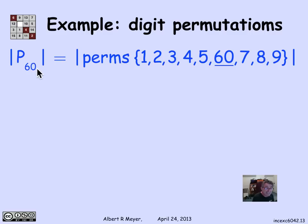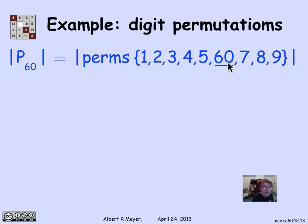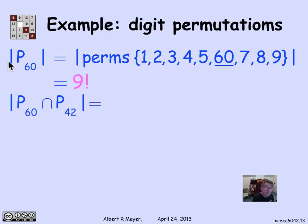Let's count P60: permutations containing the pattern 6,0. Think of it as permuting nine items — the digits 1–5 and 7–9, plus the object '6,0' treated as a single unit. There are 9 objects total, so there are 9 factorial permutations with the pattern 6,0. The same logic applies to P04 and P42, so each single-pattern set has size 9 factorial.